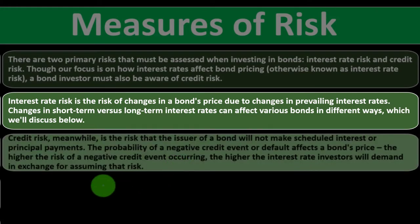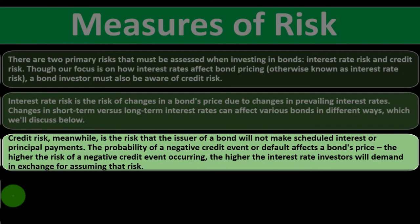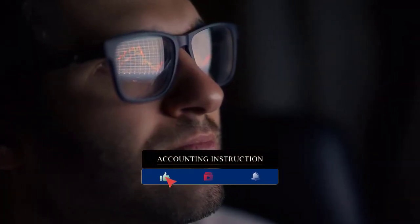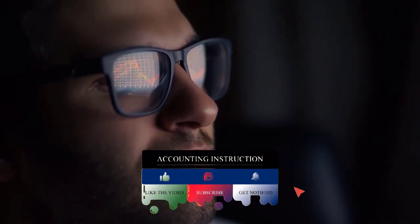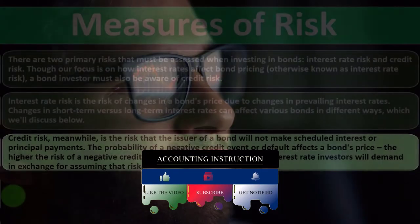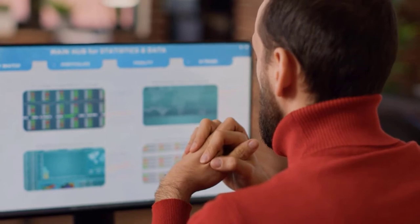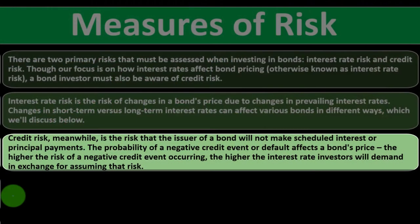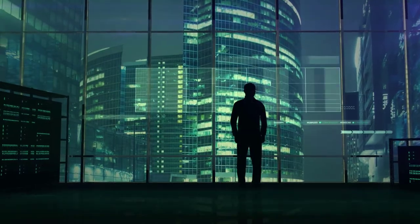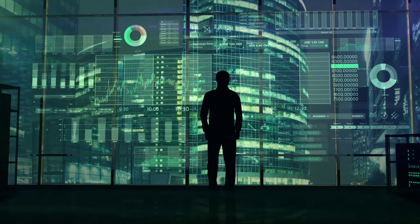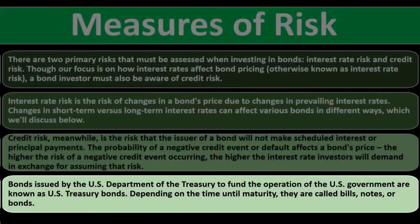Credit risk is the risk that the bond issuer will not make scheduled interest or principal payments. When comparing bonds, people often focus on creditworthy issuers such as government bonds or large corporate bonds. However, junk bonds or even a large company could default. The higher the risk of a negative credit event, the higher the interest rate investors will demand — which is why smaller companies typically must pay higher rates than large companies or governments.